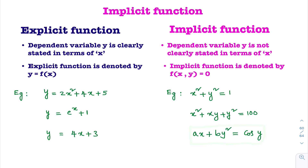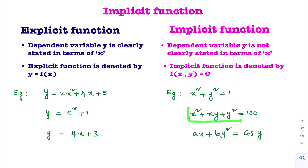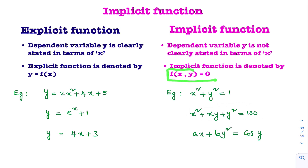Whenever you see equations like x squared plus y squared equal to 1, or x squared plus xy plus y squared equal to 100, or whenever you see an equation in terms of both x and y, those equations are known as implicit functions. The differentiation of an implicit function is known as implicit differentiation.